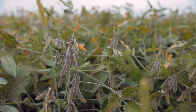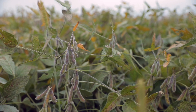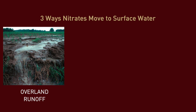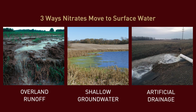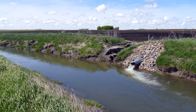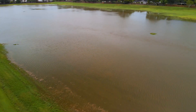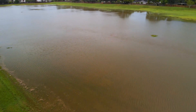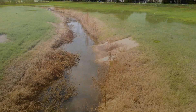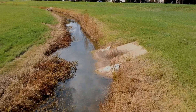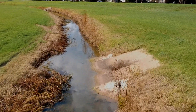There are three main ways that nitrates move to surface waters: overland runoff, shallow groundwater flow, or artificial drainage. Studies have shown that very little nitrate moves via runoff because water needs to percolate through the soil to move nitrates. Movement through drainage systems and shallow groundwater are very similar with respect to water quality, but water moves much faster through a drainage system.